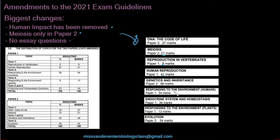Responding to the environment in humans — that covers the brain, the ear, the eye, the central nervous system, and the peripheral nervous system — is now 54 marks. The endocrine system and homeostasis is 34 marks. These used to be split in the previous exam guidelines, but the content you need to know is still the same; they are now placed together for 34 marks.